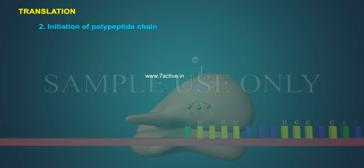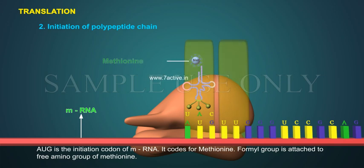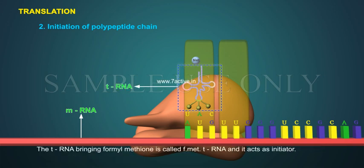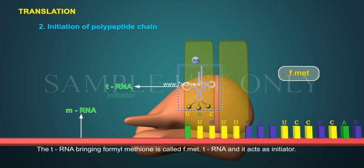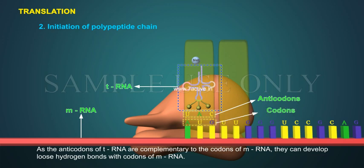Initiation of polypeptide chain: AUG is the initiation codon of mRNA and it codes for methionine. A formyl group is attached to the free amino group of methionine. The tRNA bringing formyl-methionine is called F-met tRNA. The anti-codons of tRNA are complementary to the codons of mRNA, allowing them to form loose hydrogen bonds with the codons of mRNA.